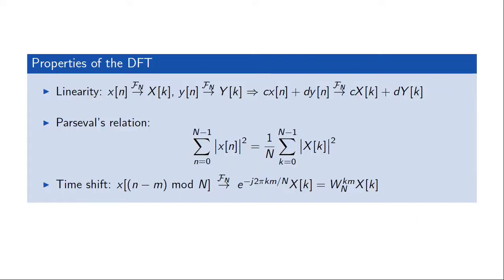Going back to the question about the time shift: the answer is now almost obvious — we should view the time shift not as a shift of the finite length sequence, but as a shift of the periodic sequence, or a periodic shift of the finite length sequence. This periodic shift maps to a simple multiplication with a complex exponential in the frequency domain, which can also be expressed in terms of these W_N coefficients.